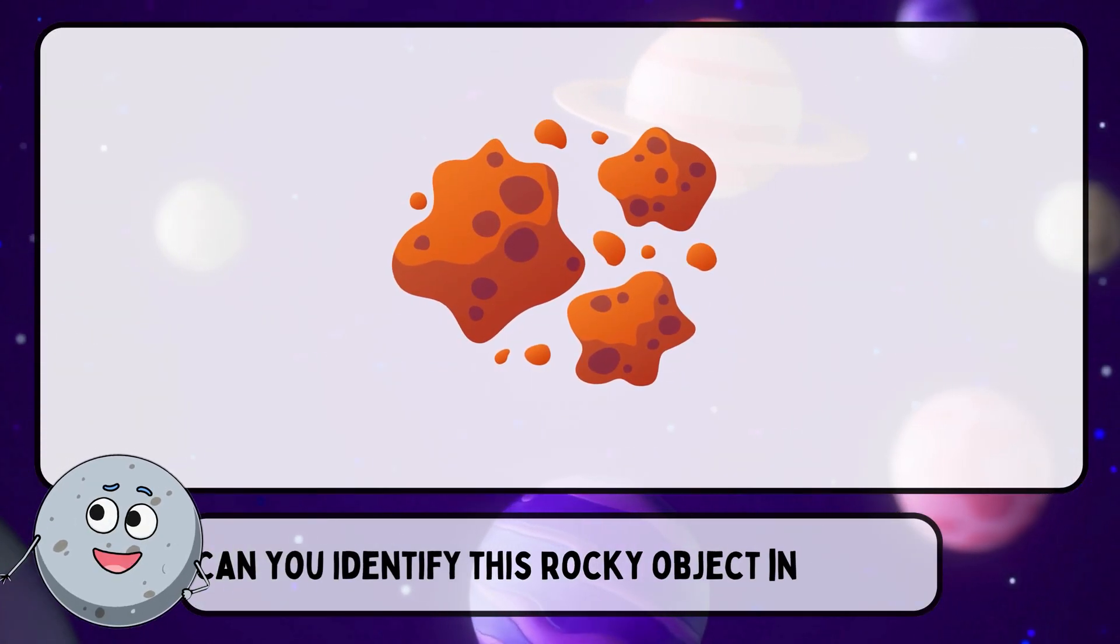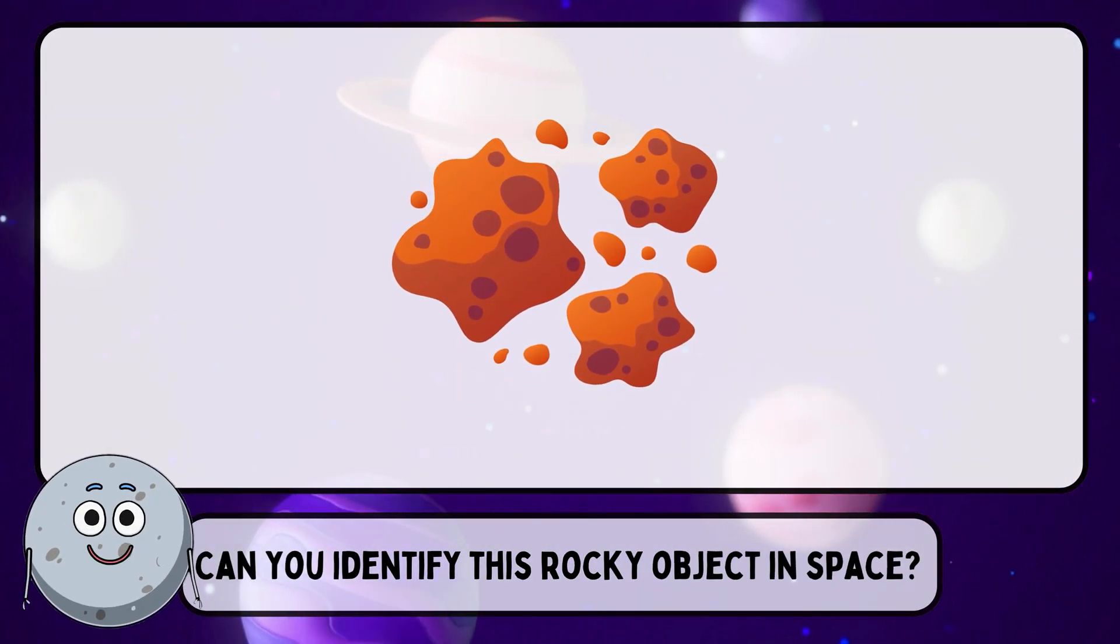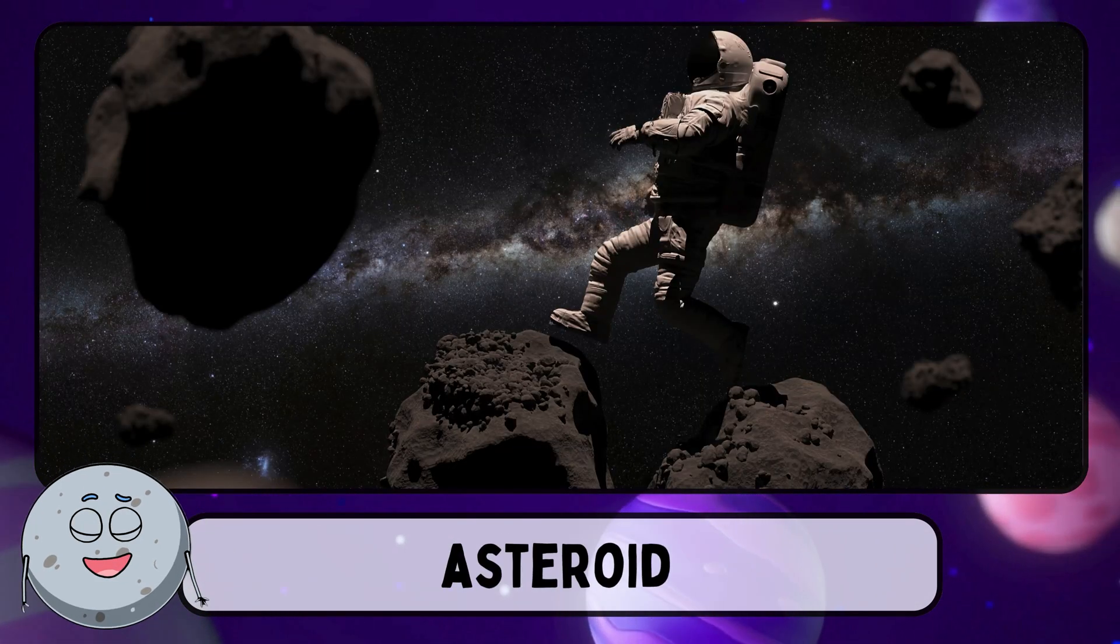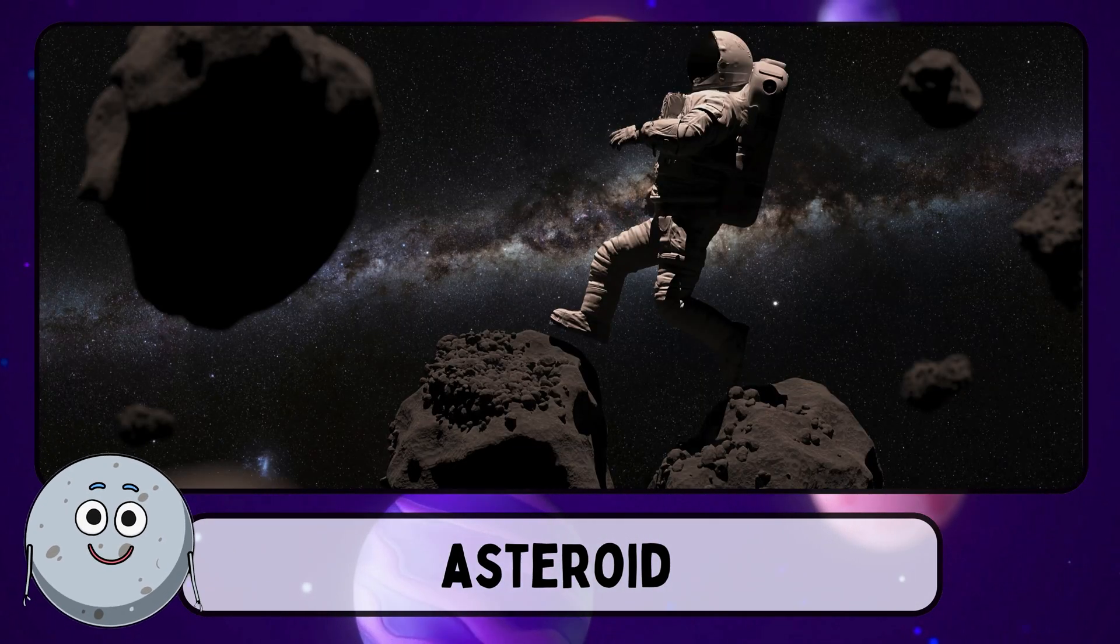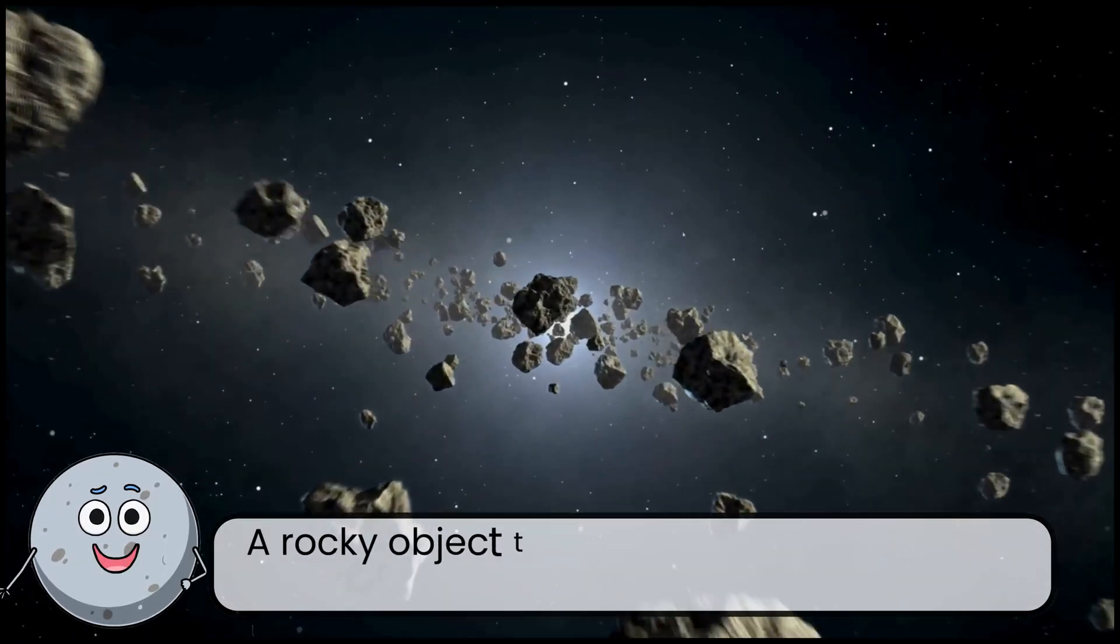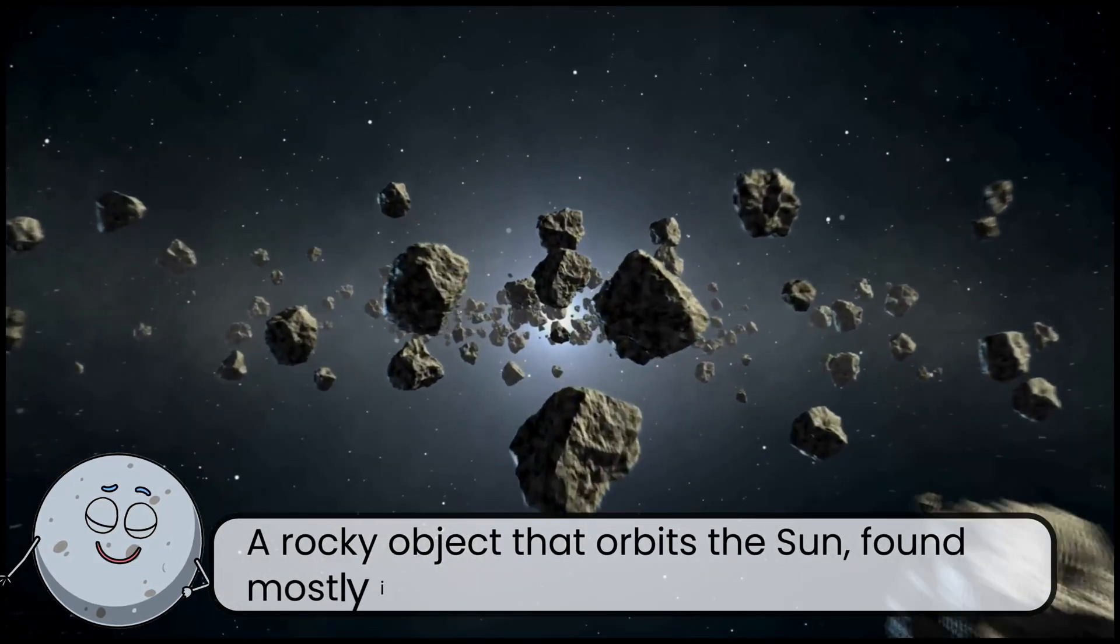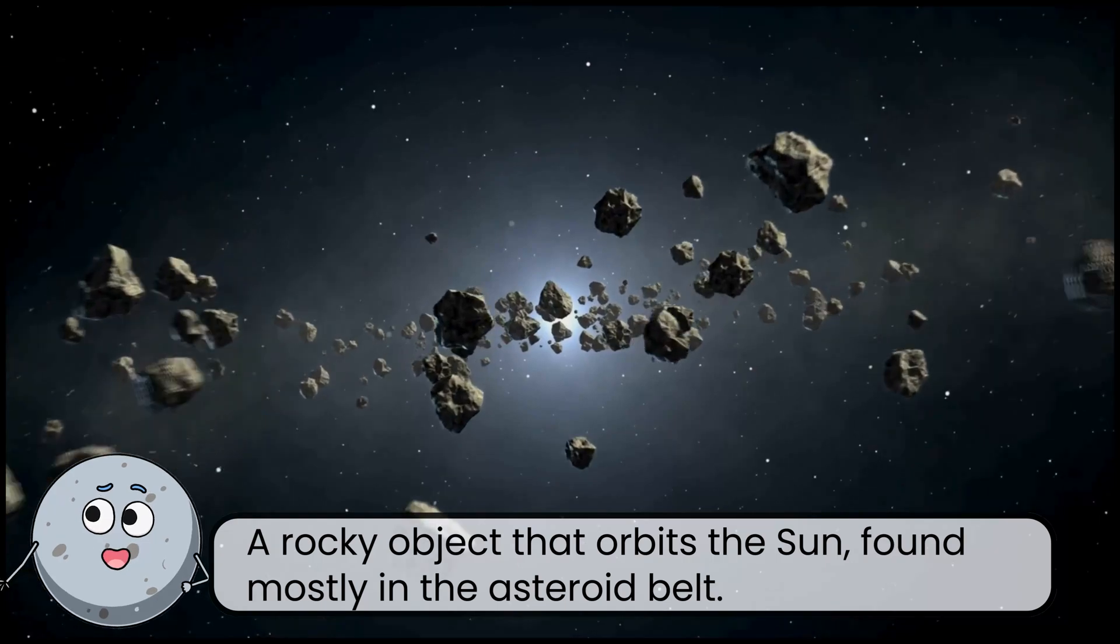Can you identify this rocky object in space? This is an asteroid. A rocky object that orbits the sun, found mostly in the asteroid belt.